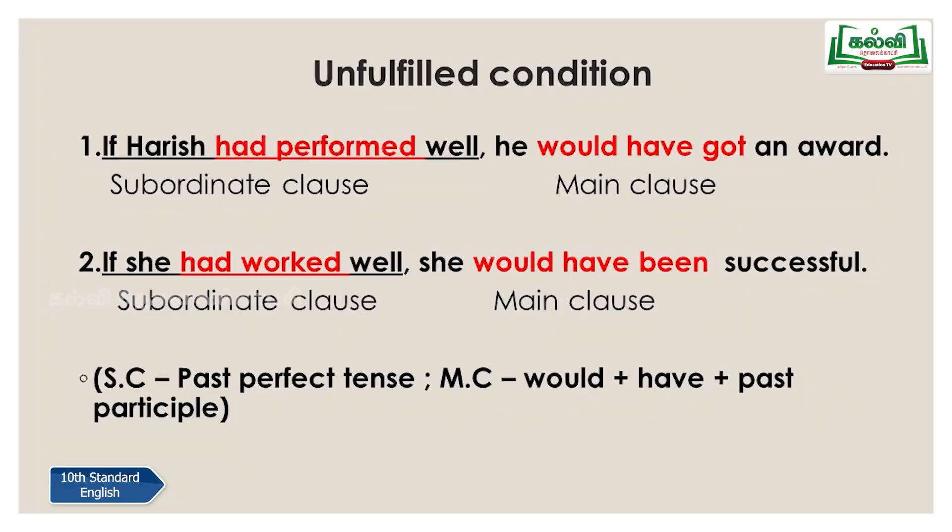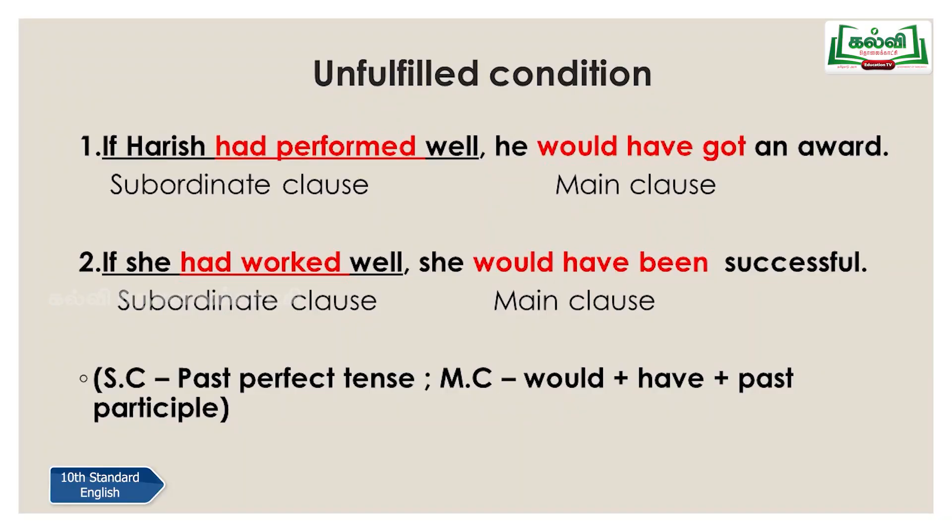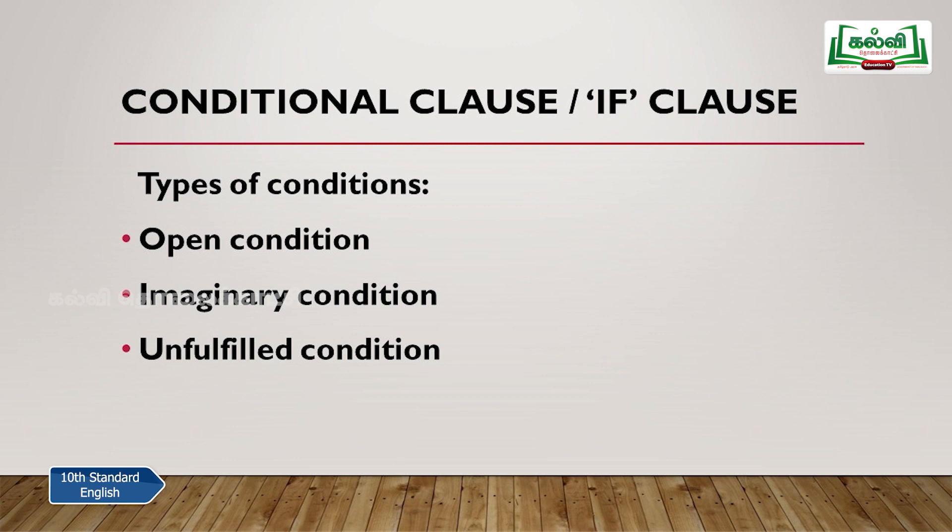Second example: 'If she had worked well, she would have been successful.' The subordinate clause is 'if she had worked well' — past perfect. The main clause: 'she would have been successful' — 'would + have + been' (past participle). The structure for unfulfilled condition: subordinate clause — past perfect (had + past participle); main clause — 'would + have + past participle'. We have learned the three types of conditions: open condition, imaginary condition, and unfulfilled condition.